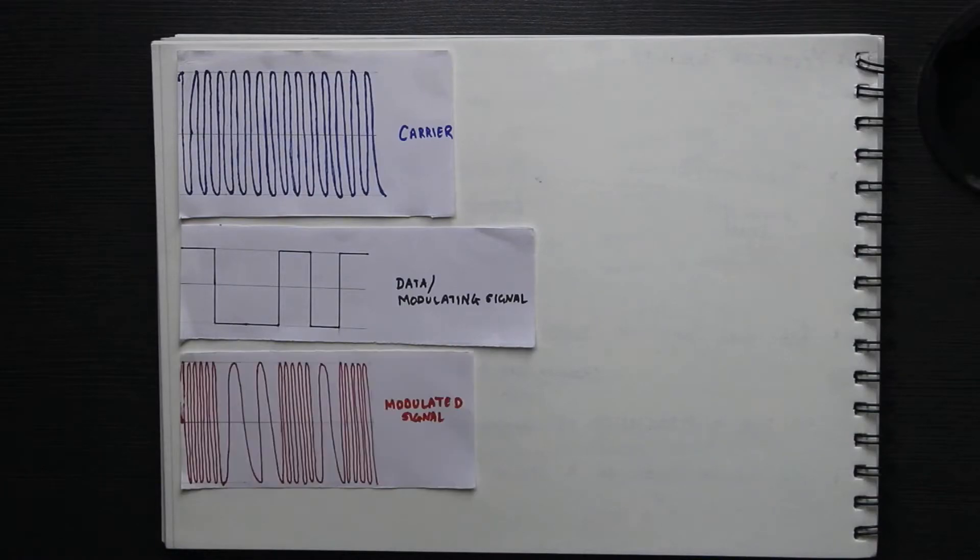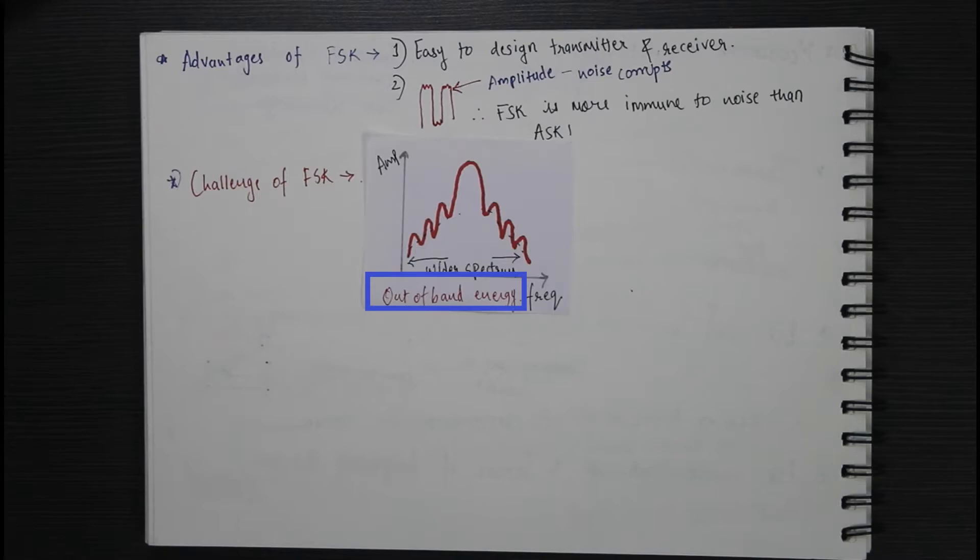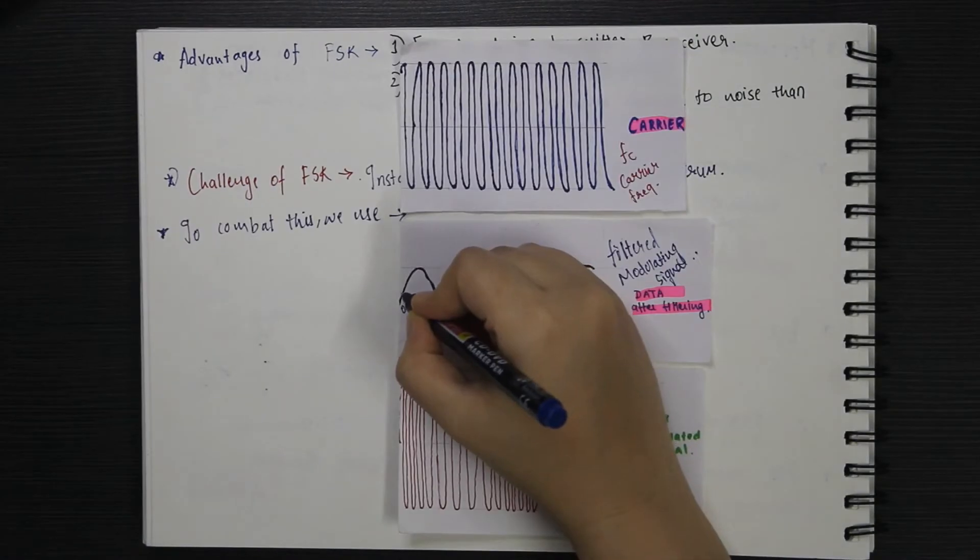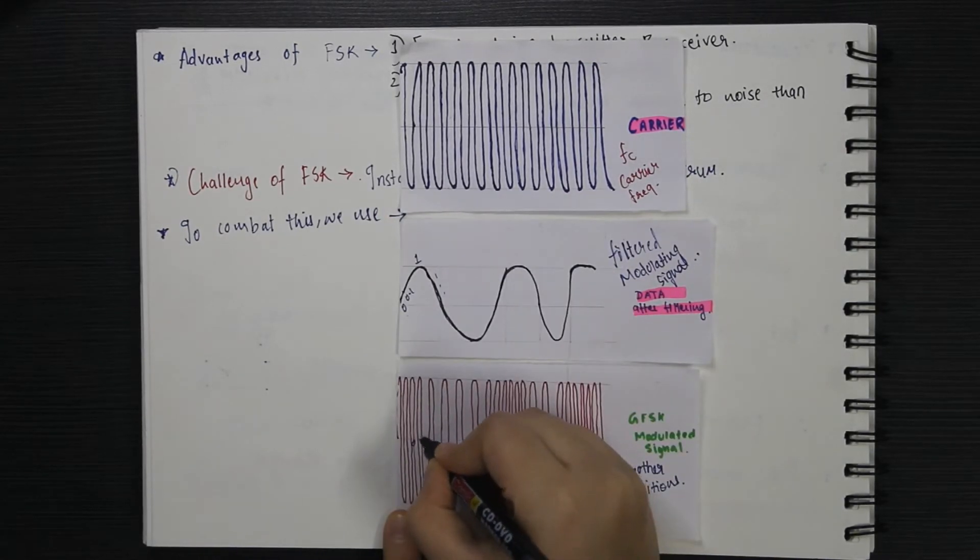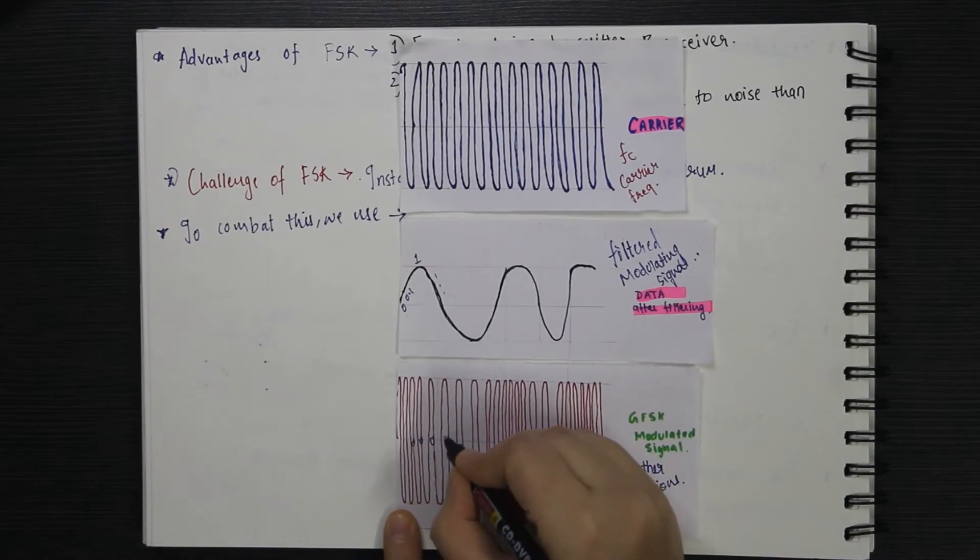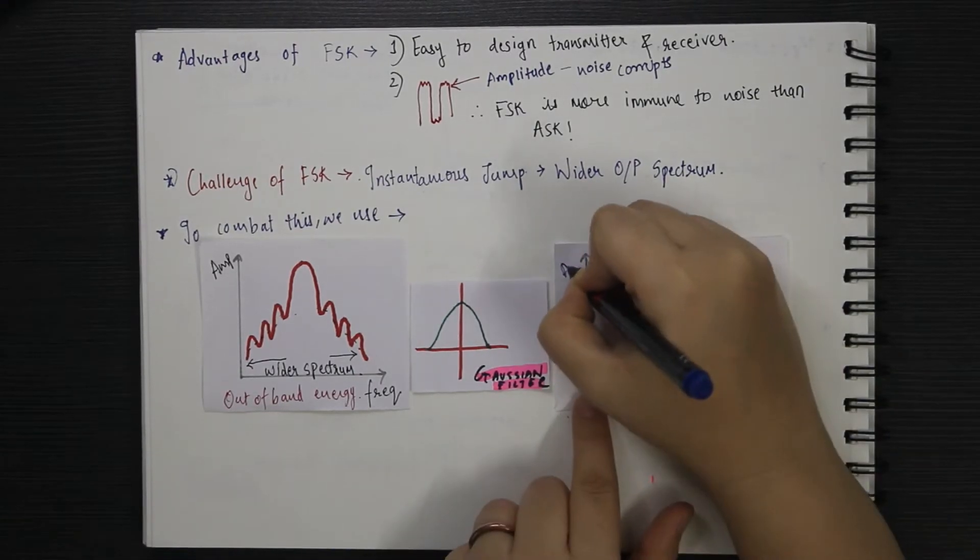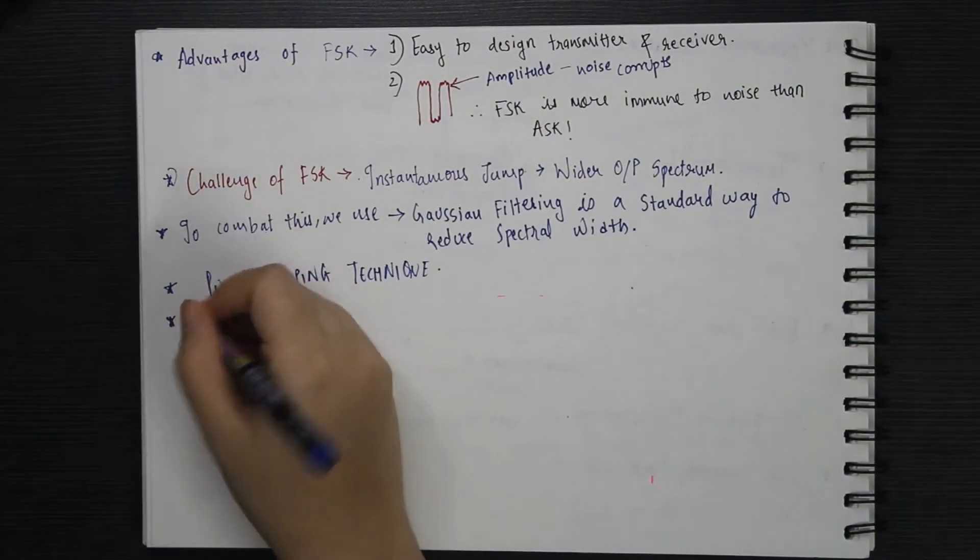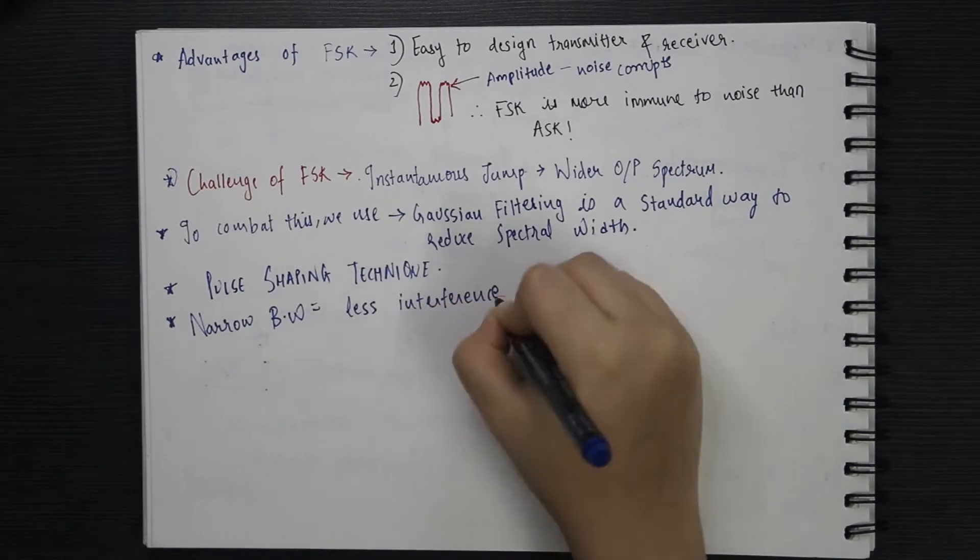Considering the previous example of switching from 0 to 1 or 1 to 0, in case of ordinary non-filtered FSK, this jump causes the modulated waveform to change rapidly, which introduces large out-of-band spectrum. If the pulse is changed going from 0 to 1 as 0, 0.1, 0.2 and so on, and ultimately, if this smoother pulse is used to determine the carrier frequency, then the out-of-band spectrum is reduced by a significant amount. A narrow spectral bandwidth also ensures reduction in the interference with other frequencies.